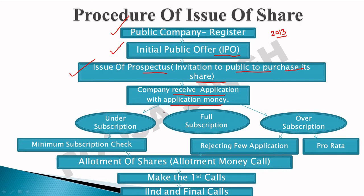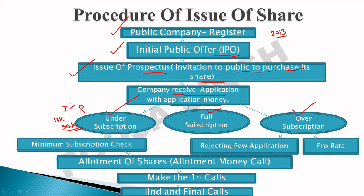This process is called subscription. Subscription can be of three types: under-subscription, full subscription, and over-subscription. Under-subscription means the company issued, say, 1 lakh shares but received only 30,000 applications — the issue was floated but fewer applications were received.